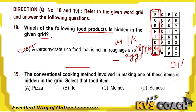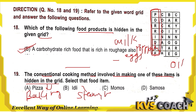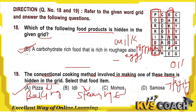Question 19: A conventional food cooking method is hidden in the grid — select the food item. Pizza is made by baking; idli by steaming; momos are also made by steaming; and samosa by frying. Checking the grid, we have baking in the grid, so the answer is pizza. Pizza is the answer for question 19.